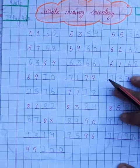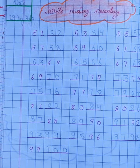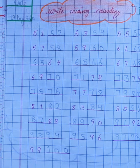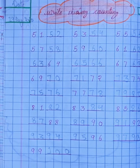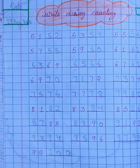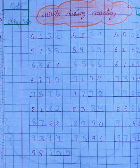Open your math notebook and first of all write down date and day, and write down CW like this. This is your revision work. And topic is write missing counting.